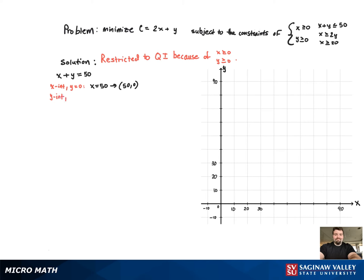Now we're moving on to the y intercept. Set x equal to 0. We get y equals 50, which is the point 0 comma 50. Now with those two points, we can graph the line.